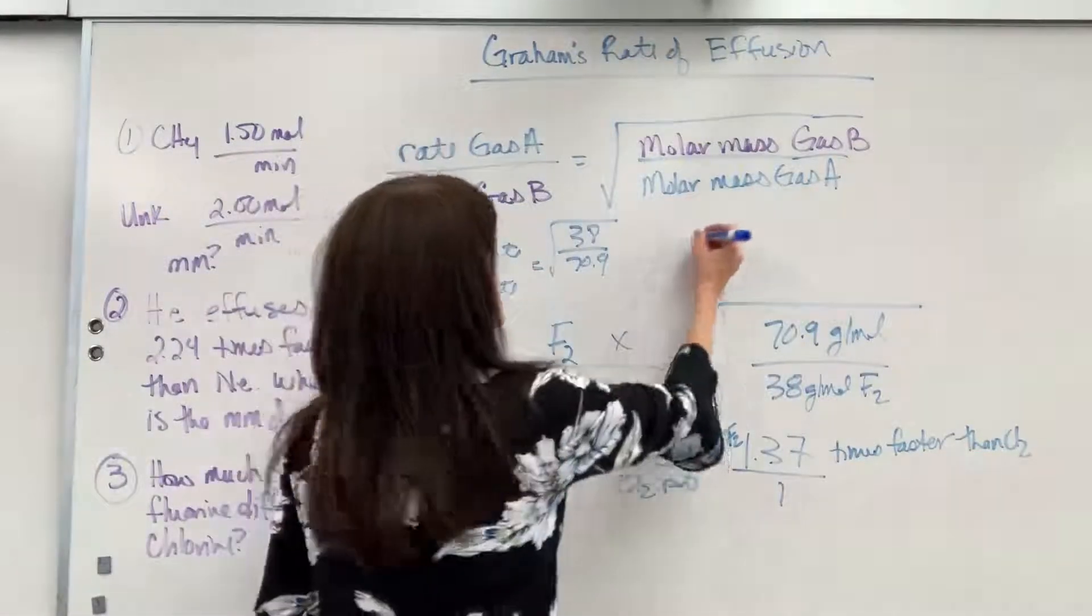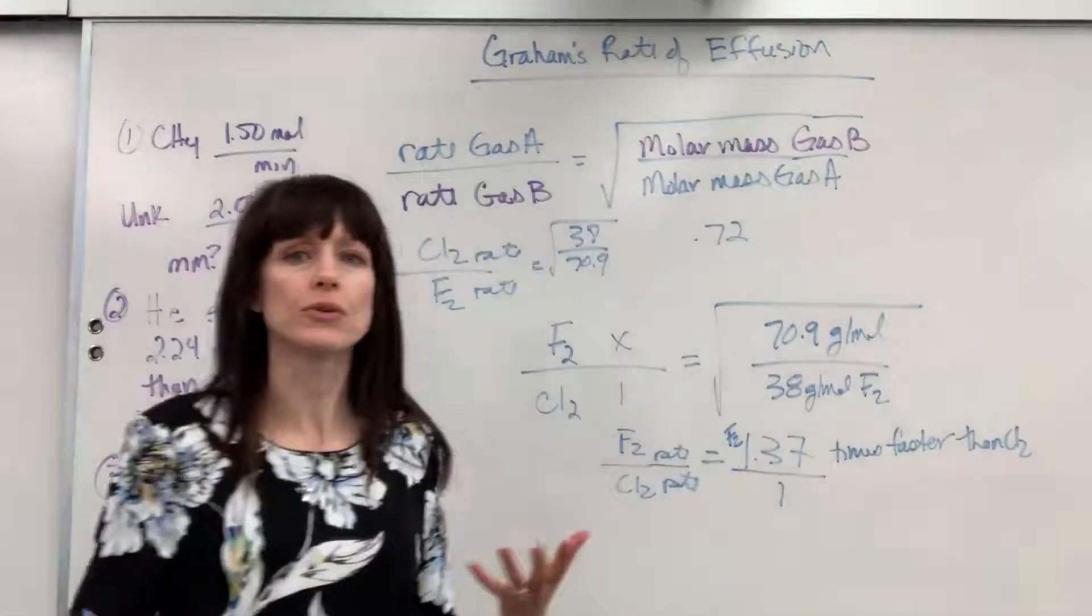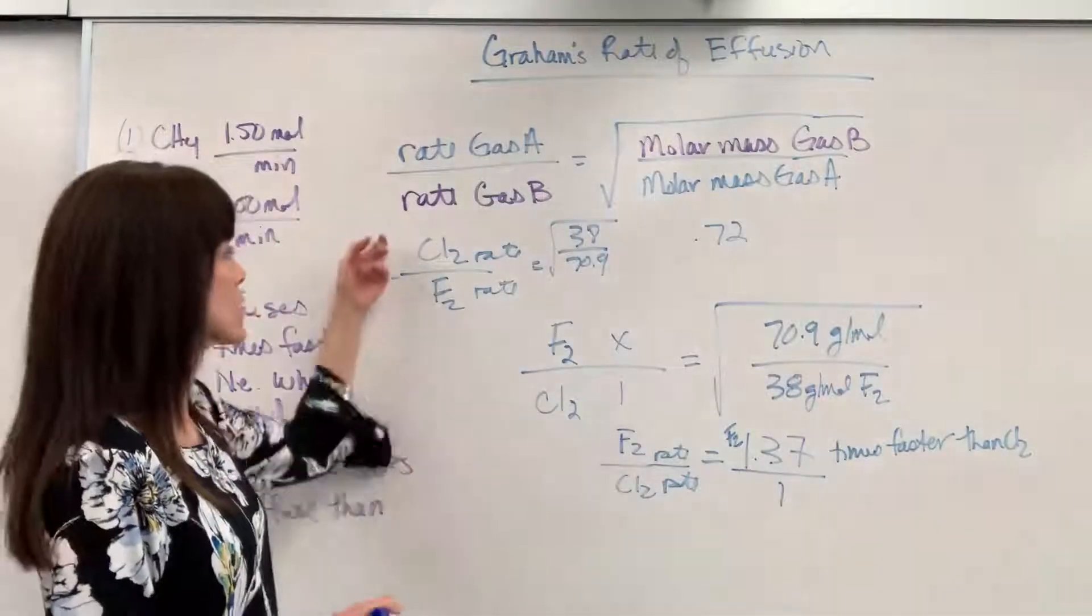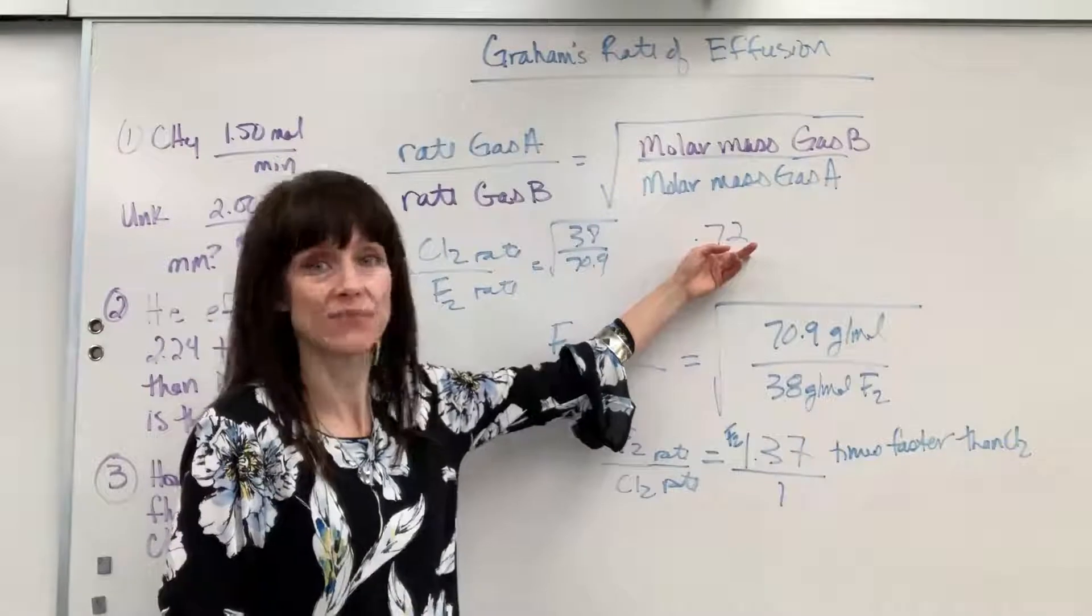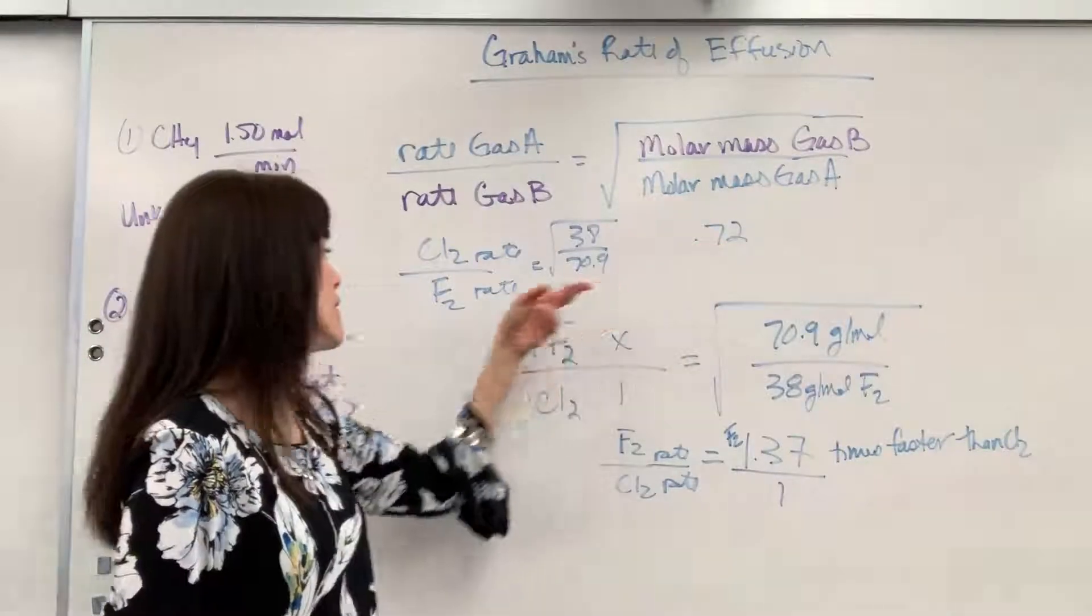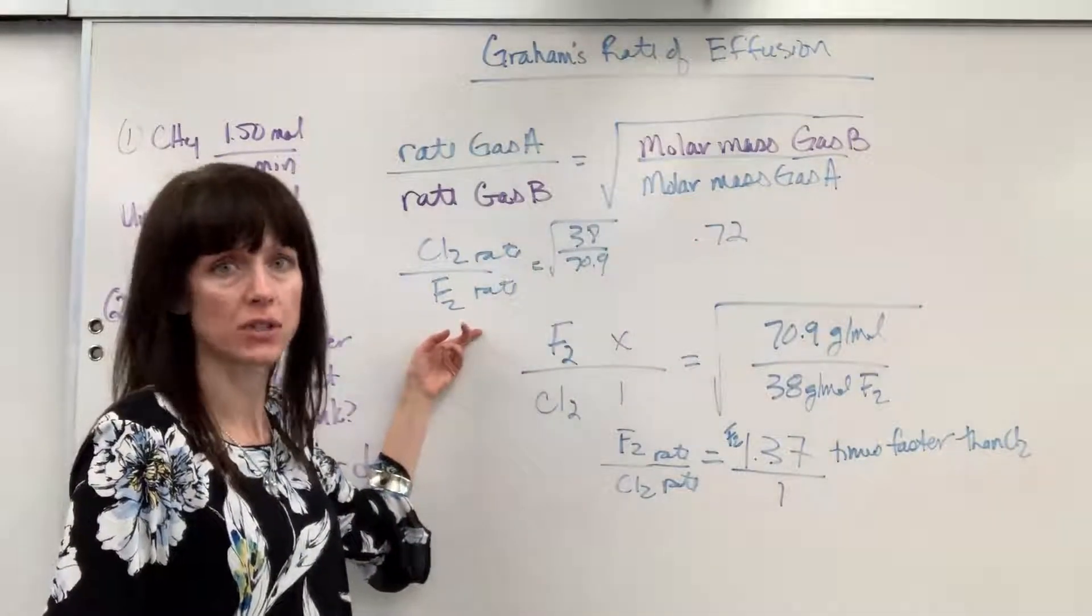Now, how you interpret that? That means that chlorine goes 0.72 times as fast, so it's a little bit slower, than the fluorine. That's how you interpret those. If it's less than 1, it means it's slower.